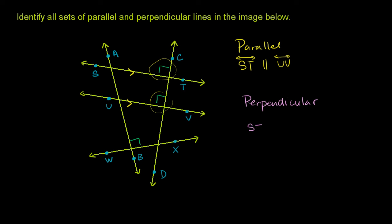So line ST is perpendicular to line CD. And we know that they intersect at a right angle, or a 90 degree angle, because they gave us this little box here, which literally means that the measure of this angle is 90 degrees.